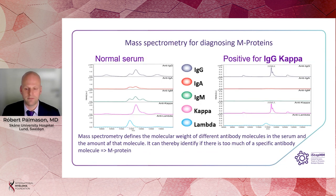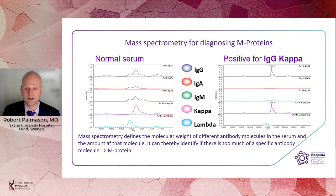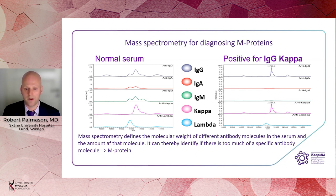So how do we perform mass spectrometry and look for M proteins? We take a serum sample and add isotype-specific paramagnetic beads to the solution. Then we run it through the mass spectrometer and get a so-called spectrograph, which you can see on this slide with normal serum on the left-hand side and a spectrograph positive for IgG kappa on the right-hand side. What the mass spectrometer actually does is define the molecular weight of different antibody molecules in the serum and the amount of each molecule. It can thereby identify if there is too much of a specific antibody molecule, which we call an M protein.